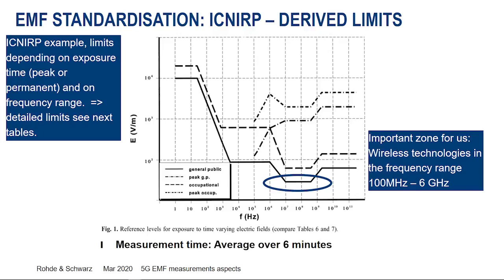What is important for us in the wireless technology world is the zone in the range of, let's say, 100 MHz to sub-6 GHz. You also see different curves, which are defined by the certain exposure time — whether this is only a few seconds of exposure, or whether this is 24/7 general exposure.